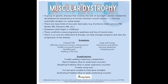Other symptoms include larger calf muscles due to compensation, muscle pain and stiffness, learning disabilities, and delayed growth. Muscular dystrophy is very concerning because it leads to many complications: trouble walking often requiring a wheelchair, heart problems due to weakening of heart muscles, breathing problems due to weakening of respiratory muscles, trouble using arms, curved spine due to weakened spinal muscles, and swallowing problems. Now we'll listen to Brad explaining how all of these manifested in his life.